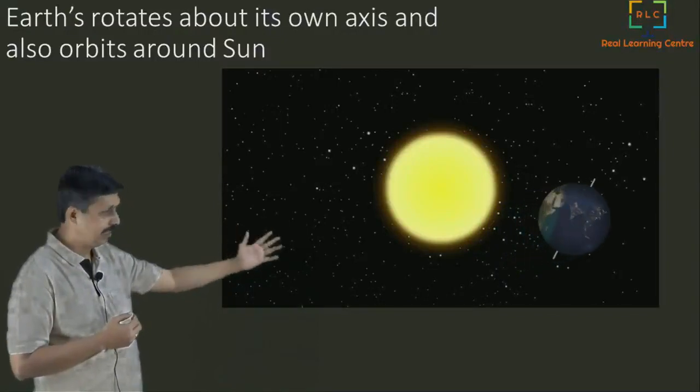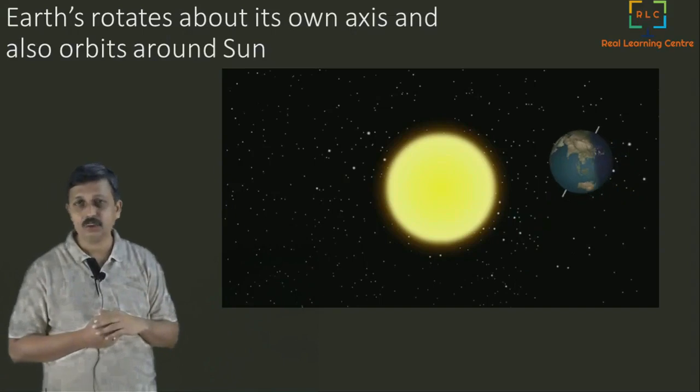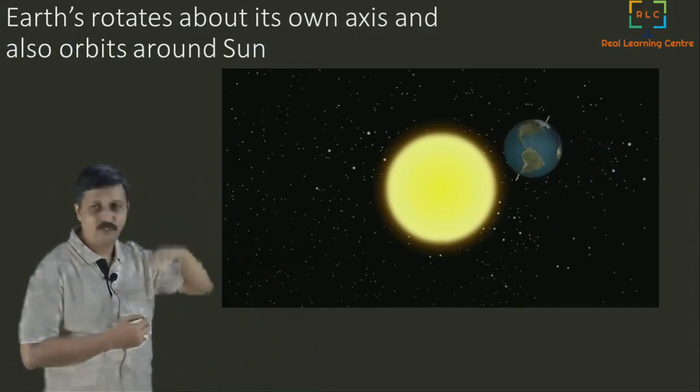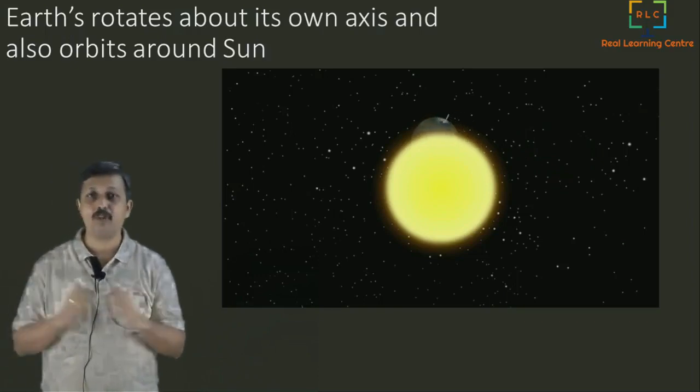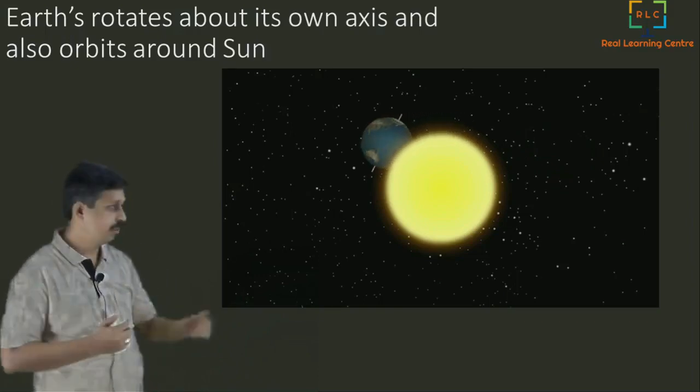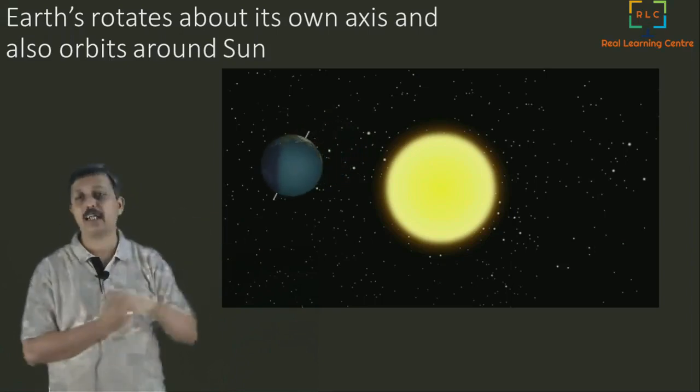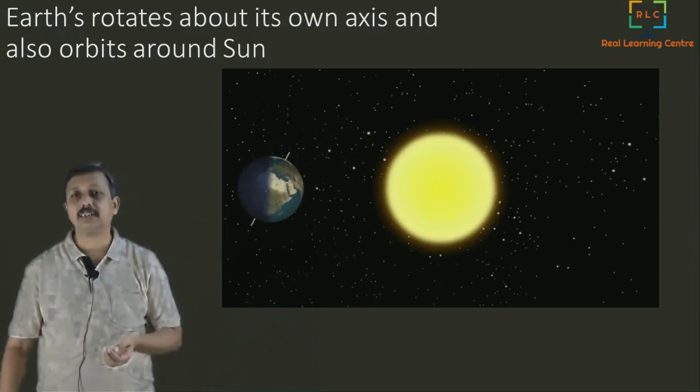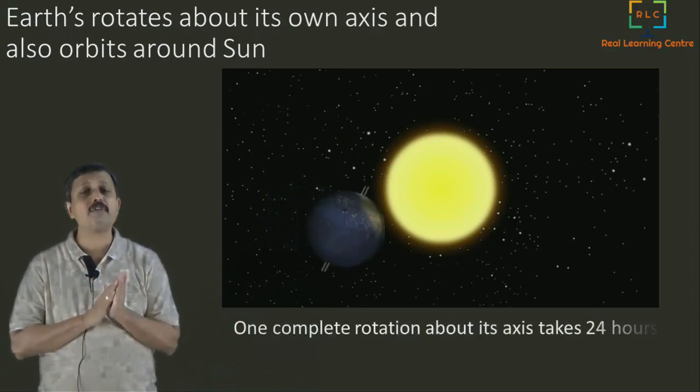Earth is rotating on its own axis and at the same time actually going around the Sun, so the rotation and revolution. That is the first step to understand the solar system: what is the relation between Earth and Sun? Earth is rotating on its own axis and also going around the Sun.